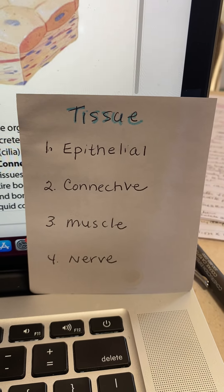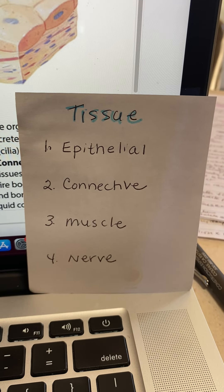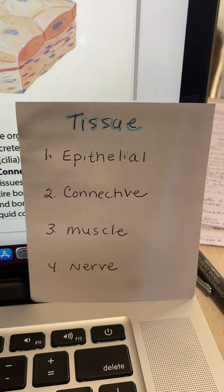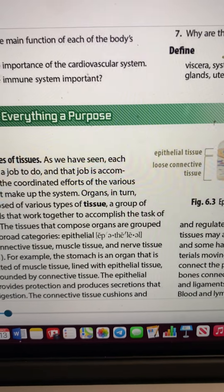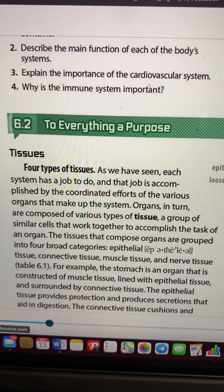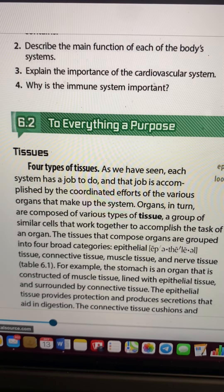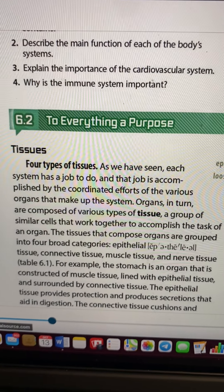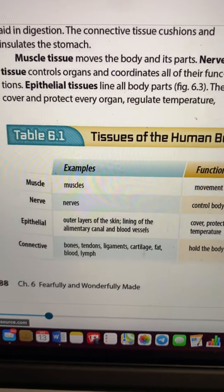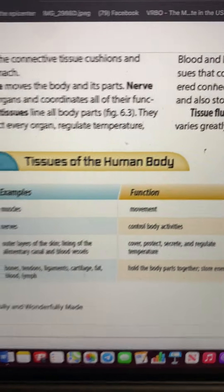Each organ has a variety — maybe a couple of these tissue types, maybe more. That's what we're talking about when we talk about tissues: those four different kinds.